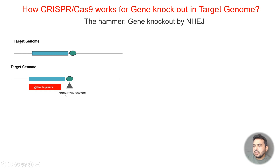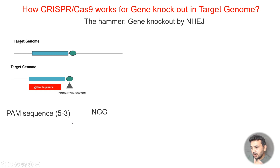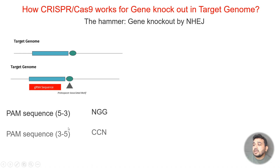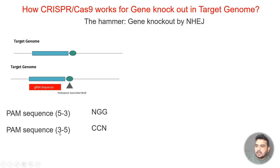We also need to make sure that this guide RNA sequence is adjacent to the PAM sequence. PAM stands for Proto-spacer Associated Motif. In most cases, the PAM sequence read 5-prime to 3-prime is NGG — where N can be anything: A, T, C, or G. If we are on the negative strand, reading 3-prime to 5-prime, we do reverse complementation, and it becomes CCN.